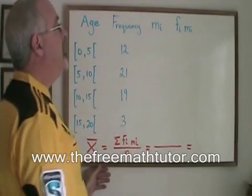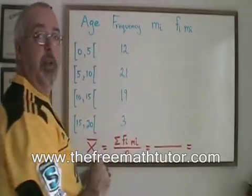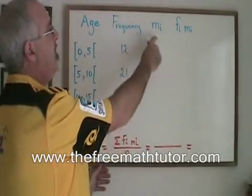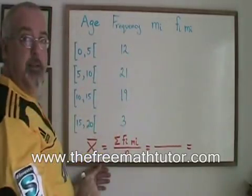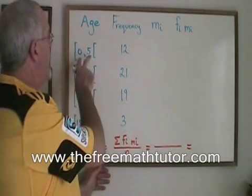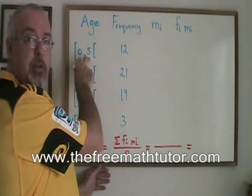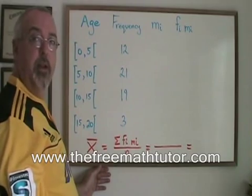In order to use this formula, we need to extend our table, and the first thing that we will do is find the midpoint of each of these classes. The midpoint is found simply by adding the two numbers that are inside the name of the class to each other and dividing by 2.